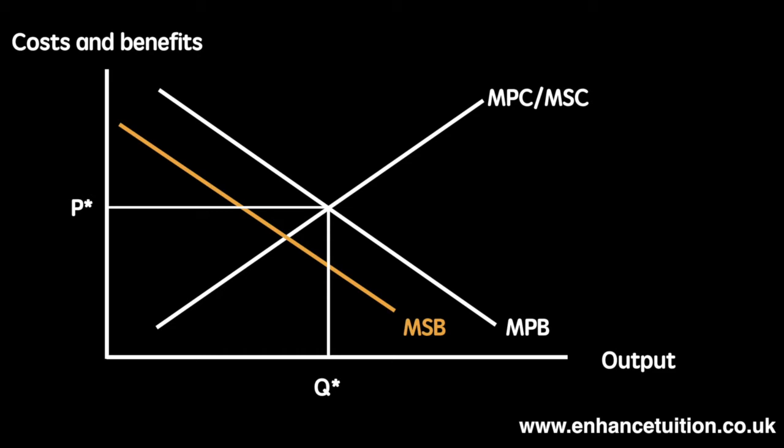The socially optimum level of output is Qs at a price of Ps. If the market was left to operate without any intervention, the result would be that this good would be over-provided when we consider the additional costs tied to the externality. Therefore we say that there is a welfare loss or deadweight loss represented by triangle XYZ.